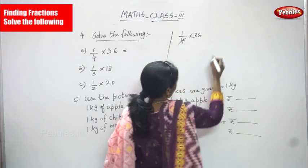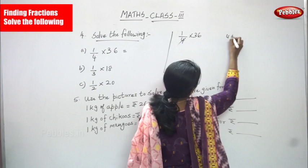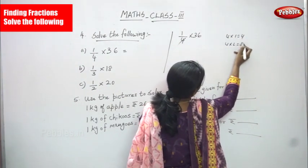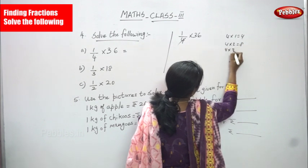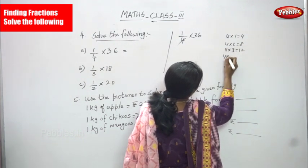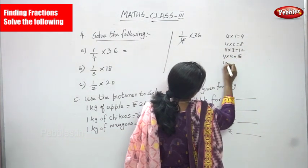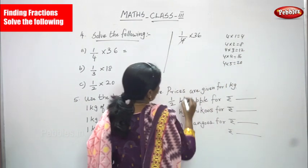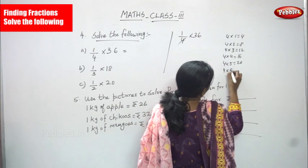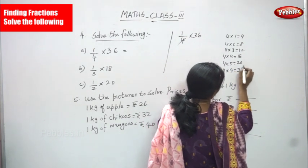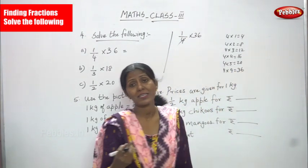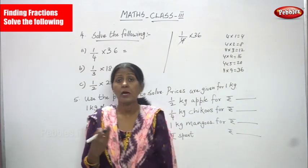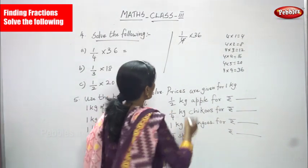Using the fourth table: 4 1's are 4, 4 2's are 8, 4 3's are 12, 4 4's are 16, 4 5's are 20, 4 6's are 24, 4 7's are 28, 4 8's are 32, and 4 9's are 36.